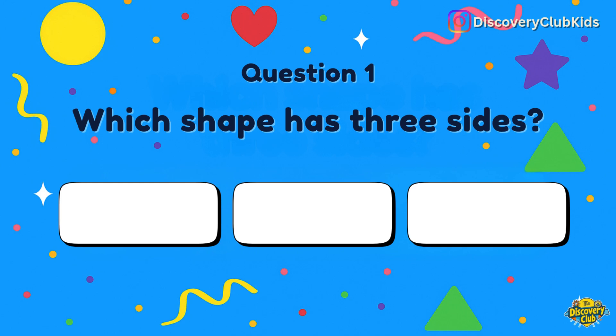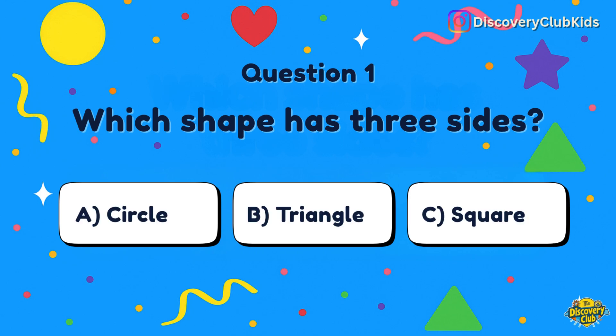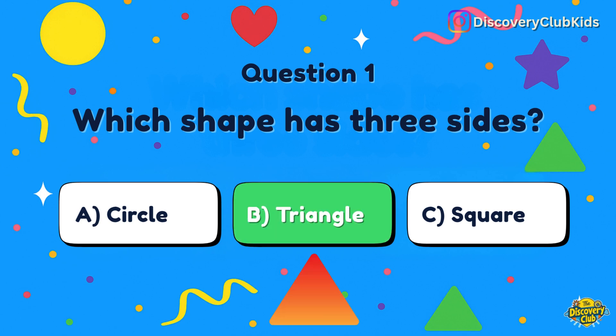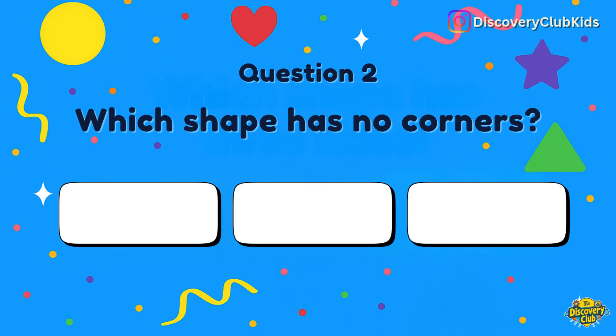Which shape has three sides? Your choices are circle, triangle, or square. The answer is triangle.